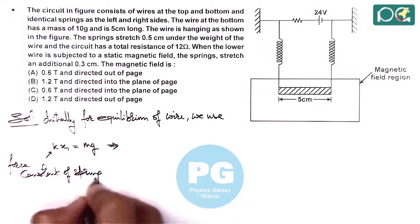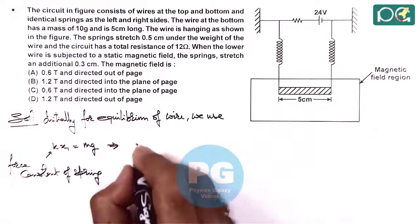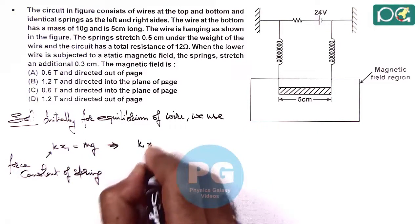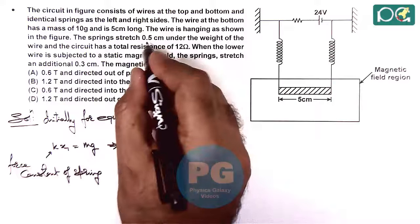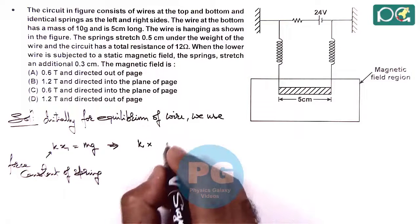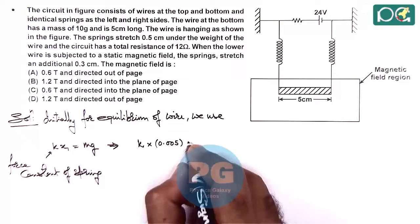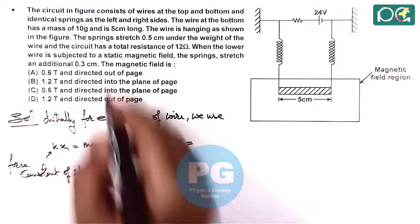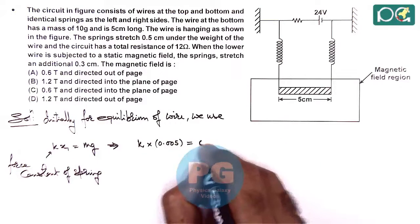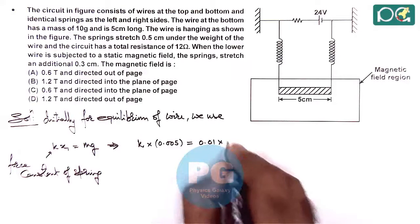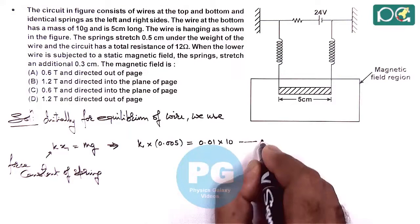We consider k as the combined force constant of the two springs. Here we write k multiplied by the elongation distance, which is 0.5 centimeters or 0.005 meters, equals mg. The mass is given as 10 grams, which is 0.01 kilograms, and g we take as 10. Say this is our equation 1.